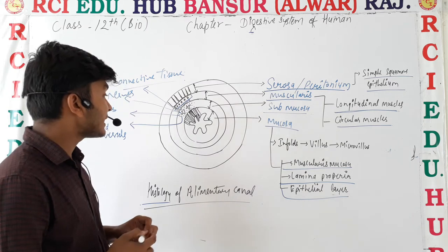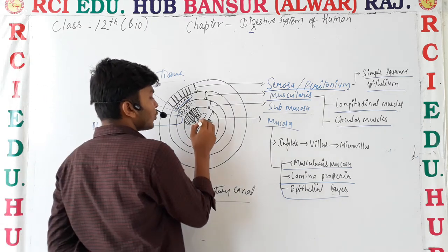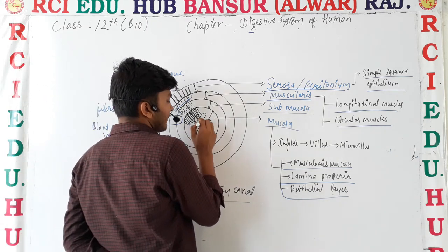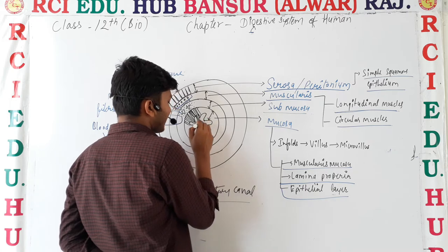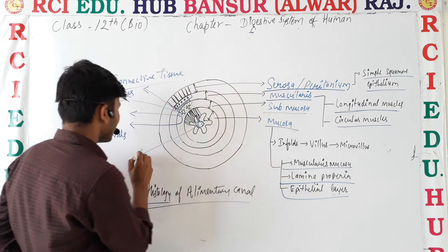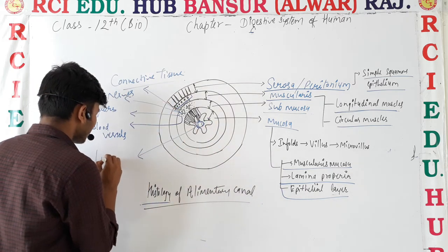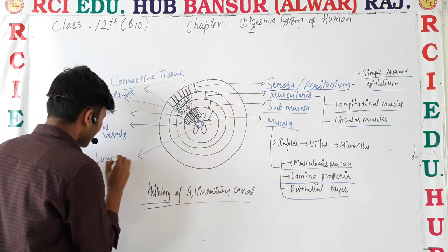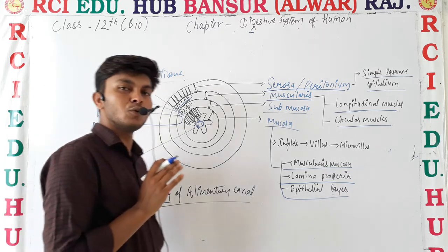The mucosa is the most innermost layer. The blank space inside the alimentary canal is known as the lumen.